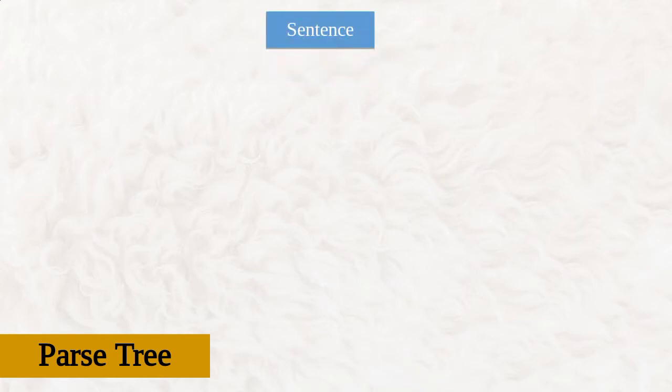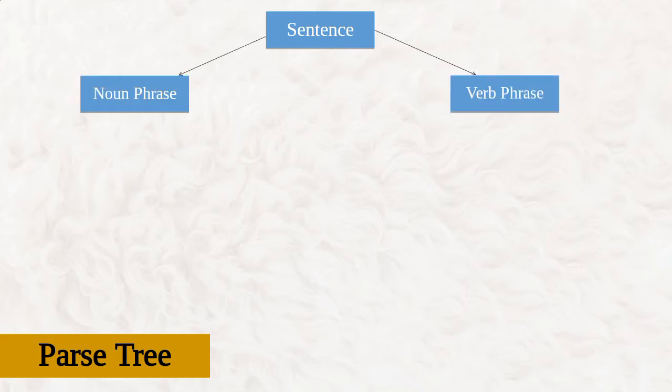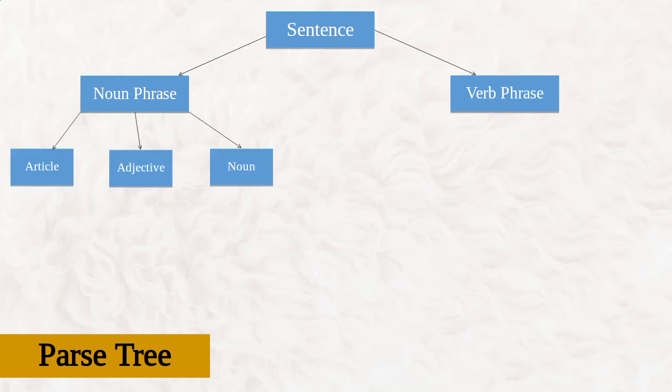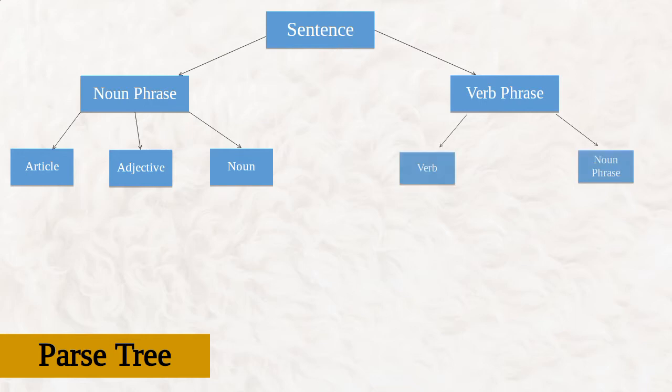Let's see the parse tree. We have a sentence. That sentence can be broken down into a noun phrase and a verb phrase. Further, the noun phrase can be broken into an article, adjective, and a noun, and the verb phrase is broken down into a verb and a noun phrase.